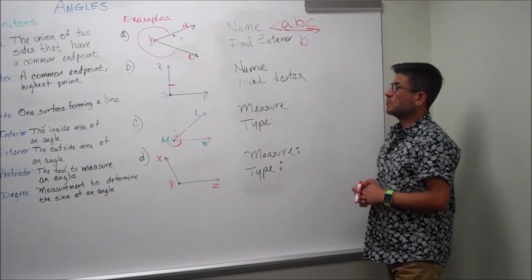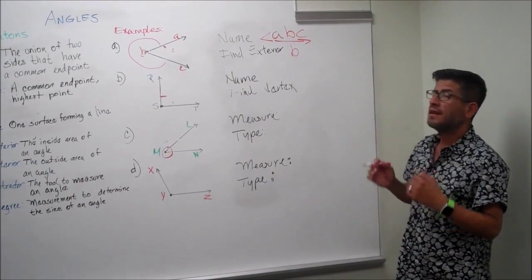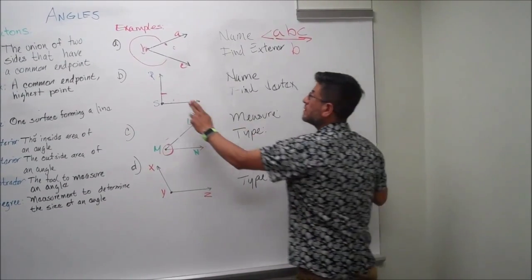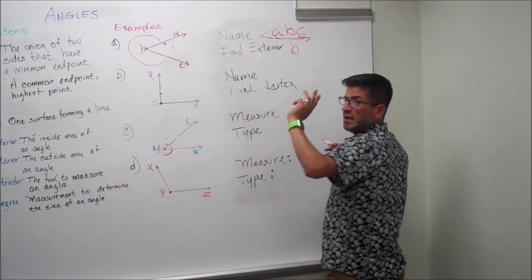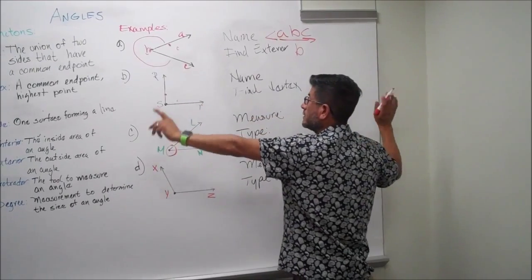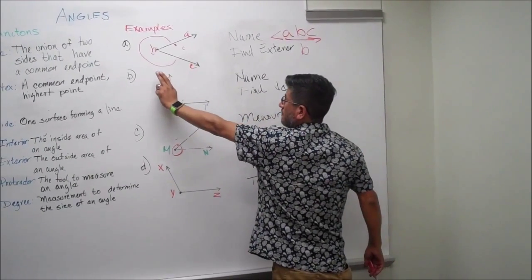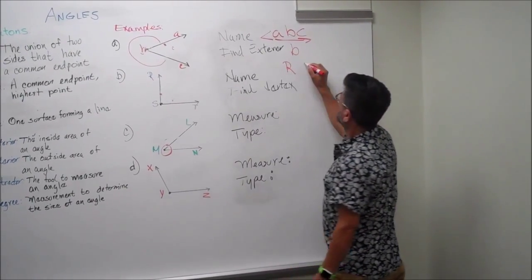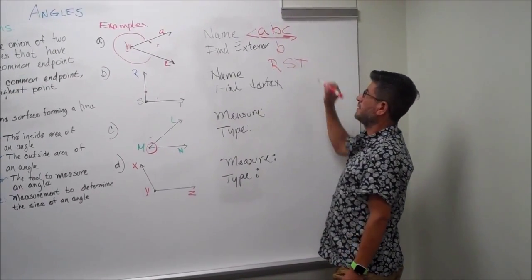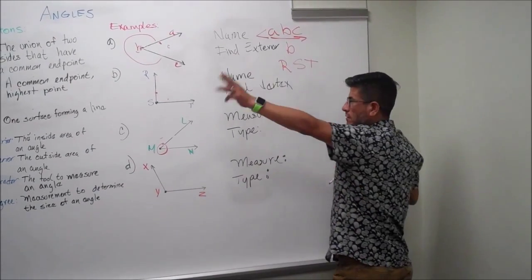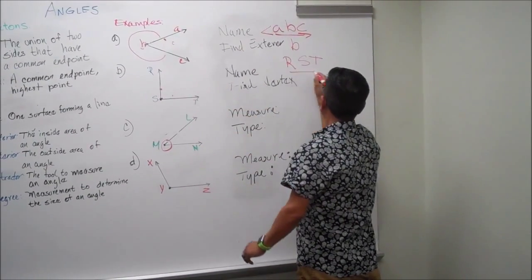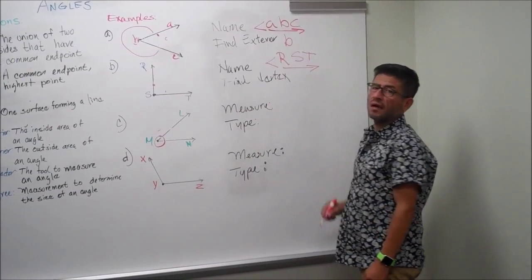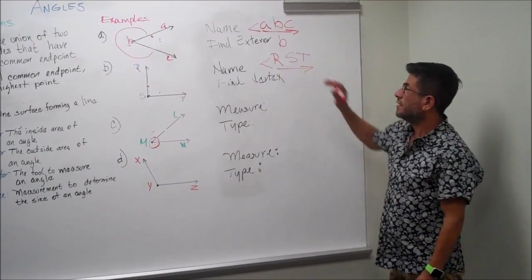Let's go to the next one. It's asking us to name the angle again. Always remember what we did on the last one and read it from left to right. You're going to have R, S, and T. R, S, T — left to right — and a little symbol to tell us that that is an angle. And that's our name of the angle.